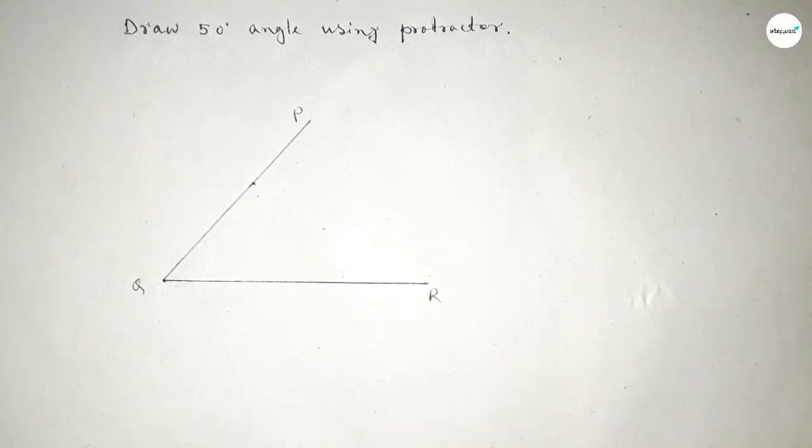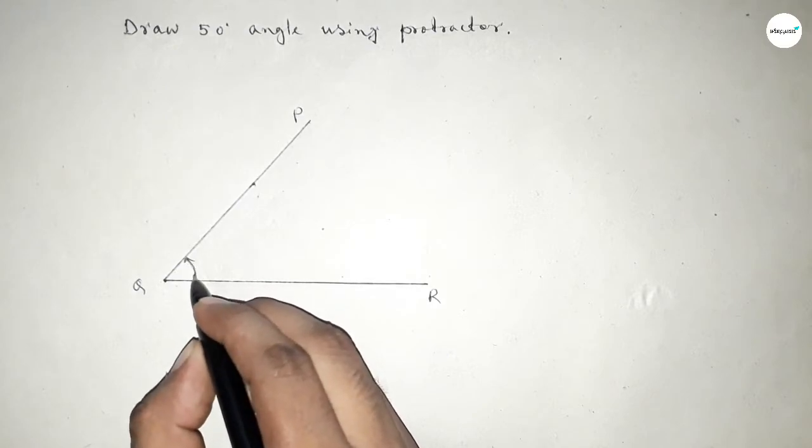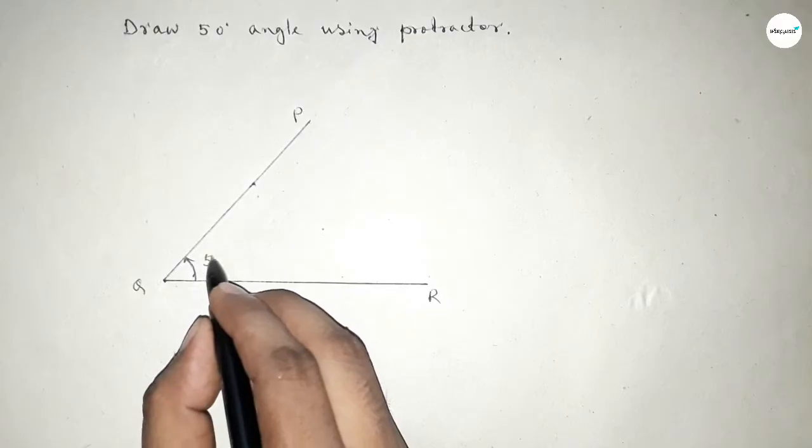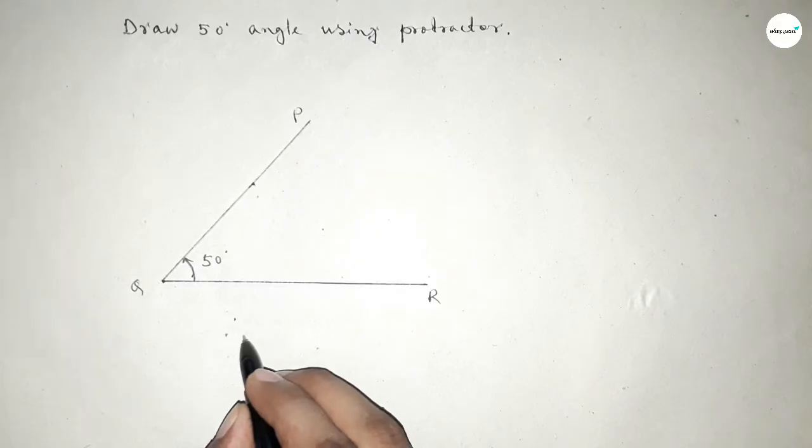So angle PQR is 50 degree angle. So this is 50 degree. Therefore angle PQR equal to 50 degree.